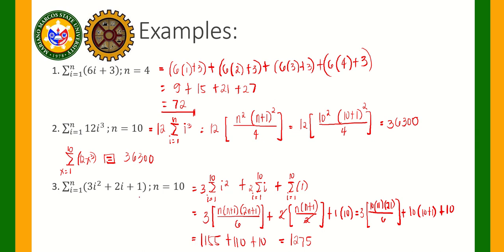If you calculate that on your calculator, input 3x squared plus 2x plus 1, x from 1 to 10, and press equals — the answer will be 1,275. That is the summation notation.